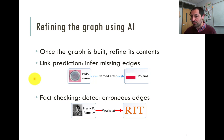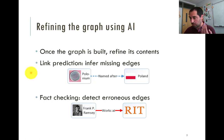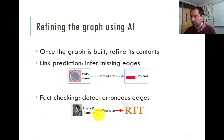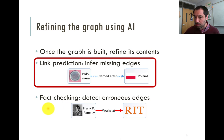Once the graph is built, we would like to refine its contents. There are two main tasks: Link Prediction, which means inferring missing edges or knowledge that is not present in the graph, and Fact Checking, which is trying to detect erroneous edges — edges that are not really true. In this talk, I'm going to focus on Link Prediction.